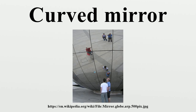These mirrors are called converging because they tend to collect light that falls on them, refocusing parallel incoming rays toward a focus. This is because the light is reflected at different angles, since the normal to the surface differs with each spot on the mirror.